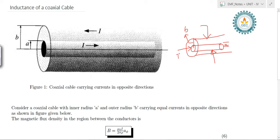Let I be the current flowing through the inner conductor. The same I will flow through the outer cylinder in the opposite direction. The magnetic flux density in between the region of these conductors is B and its value is equal to mu naught I divided by 2 pi rho a phi.